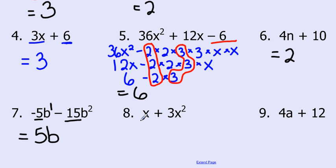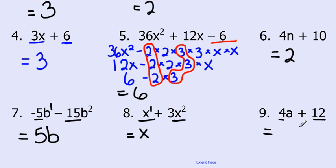Looking at this one: we have 1x, which we can consider as x to the power of 1, and we have 2 of them over here, so this is x times x. The highest possible common factor I can take out is x. I can't take out a number here because all that's here is 1, so the greatest common factor would be 1. For the next example, I have a 4 and a 12: 4 goes into itself and 4 goes into 12, so 4 is the greatest common factor. I can't take an a out because there's no a in the second term. The greatest common factor is 4.